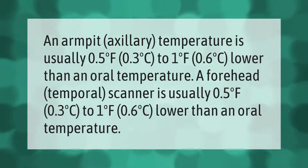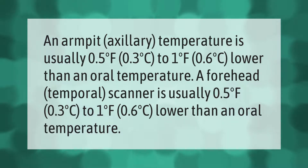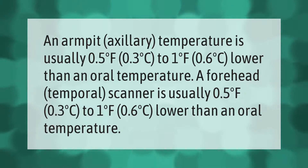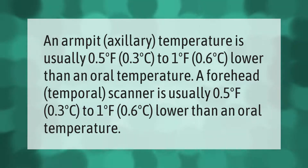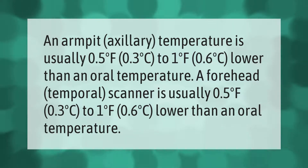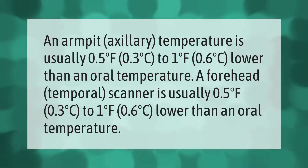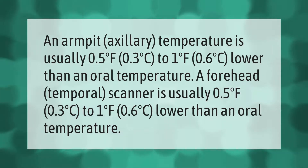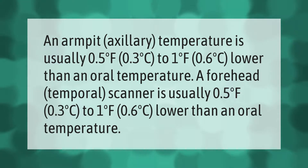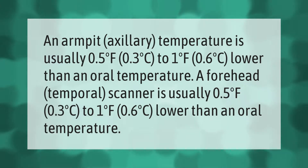An armpit (axillary) temperature is usually 0.5 degrees Fahrenheit (0.3 degrees Celsius) to 1 degree Fahrenheit (0.6 degrees Celsius) lower than an oral temperature. A forehead temporal scanner reading is also usually 0.5 to 1 degree Fahrenheit lower than an oral temperature.